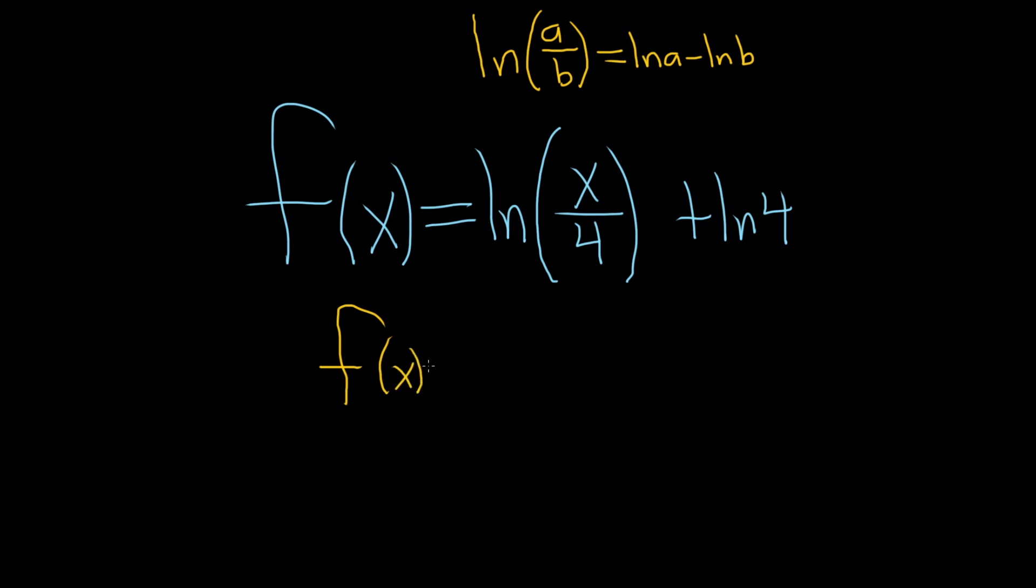So f of x is equal to, it'll be natural log of x minus natural log of 4, right? So the log of the top one minus the log of the bottom one plus the natural log of 4.